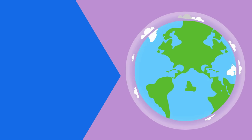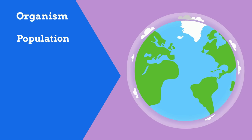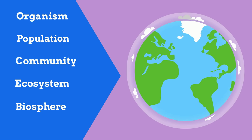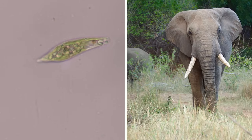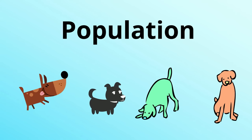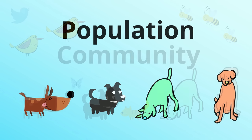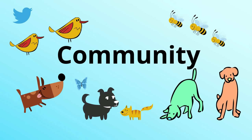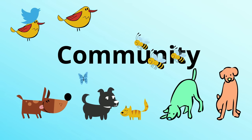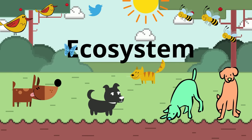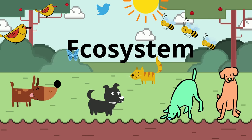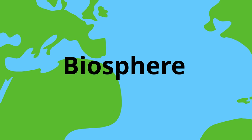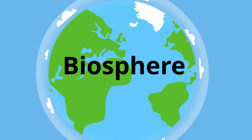Ecology can be studied at five broad levels: the organism, population, community, ecosystem, and biosphere. An organism can range from a single protist to a large animal like an elephant. A population is a group of organisms of the same species that live in the same area at the same time. A biological community consists of all the populations of different species that live in a given area. An ecosystem consists of all the organisms in an area — the community — and the abiotic factors that influence the community. The biosphere is planet Earth viewed as an ecological system.